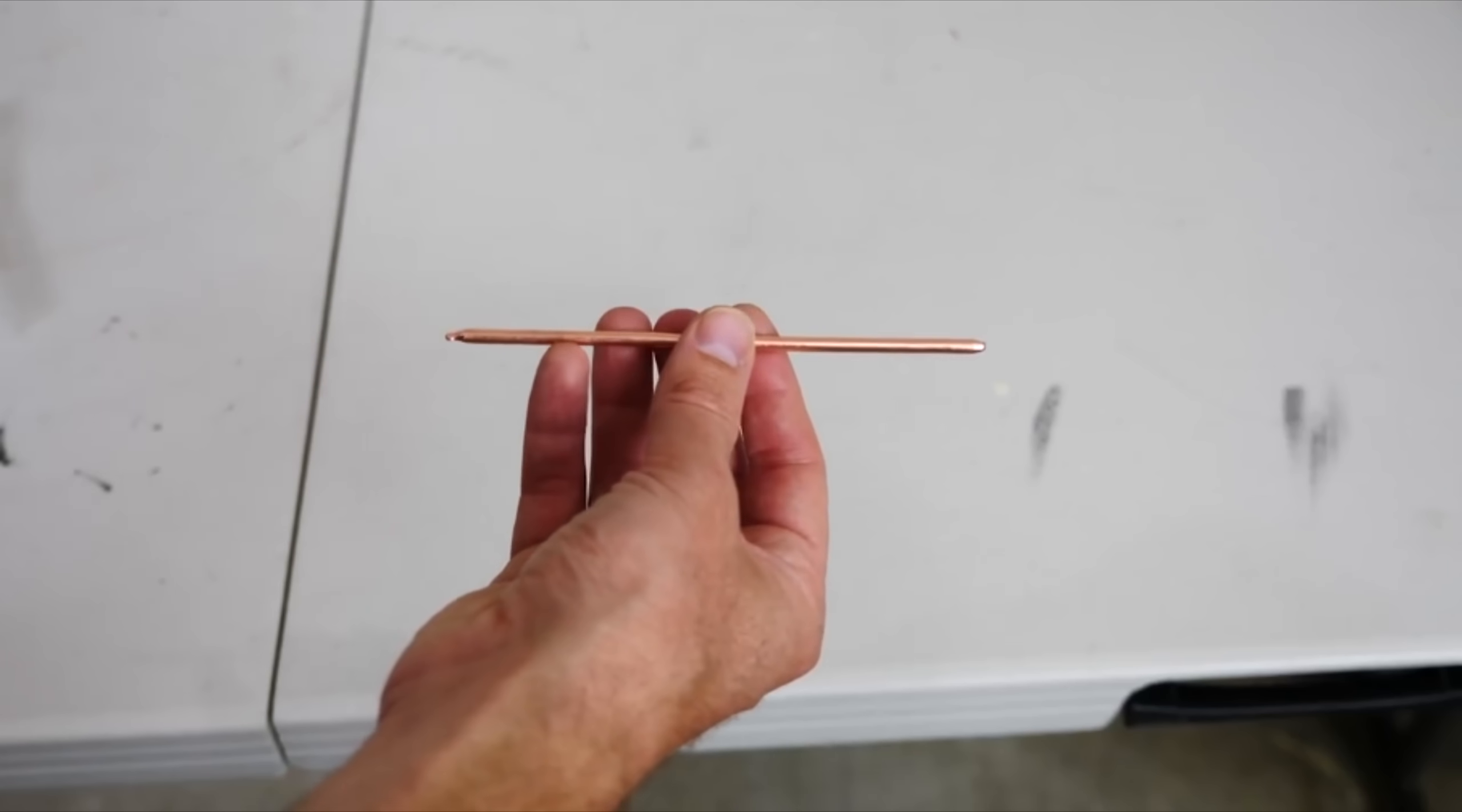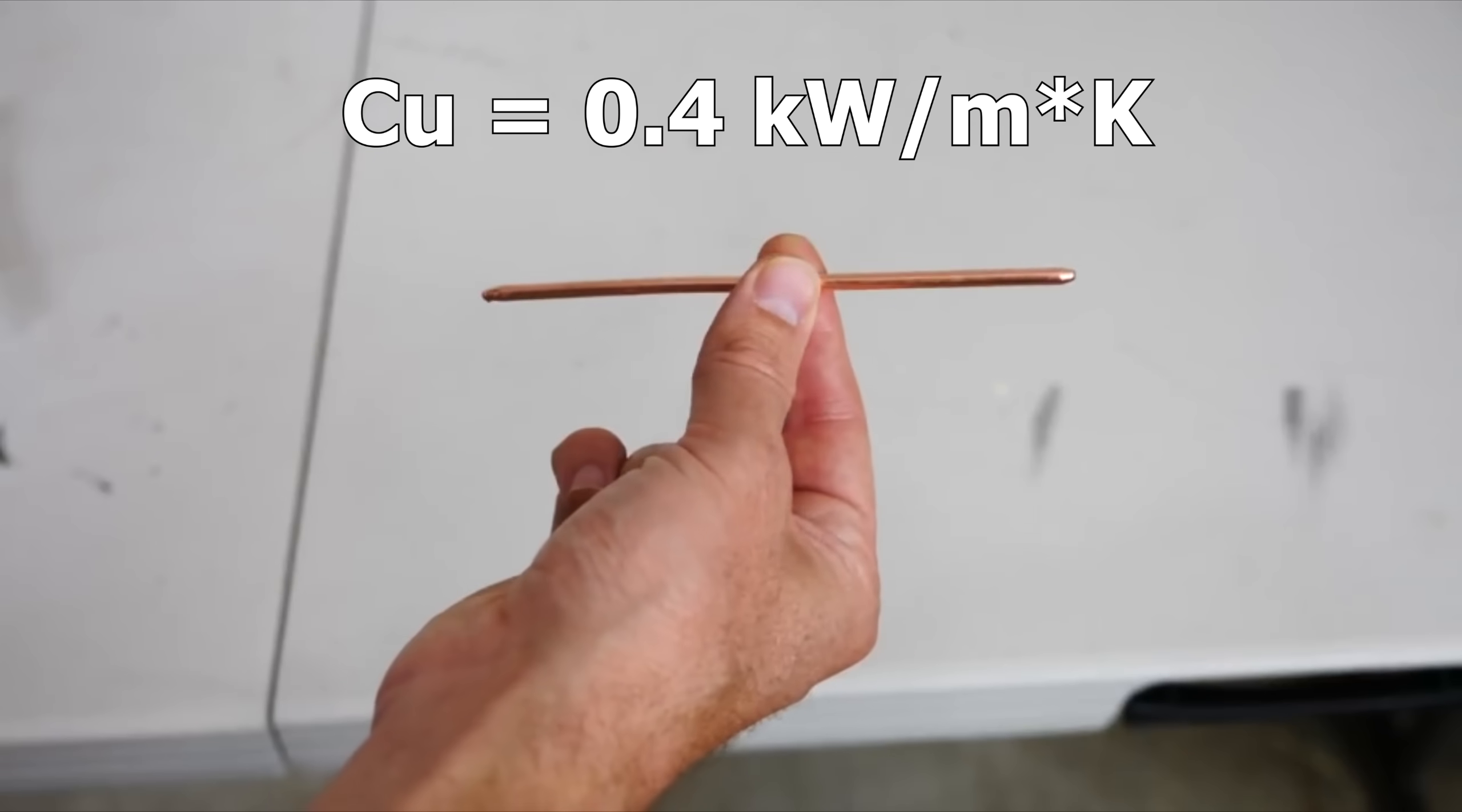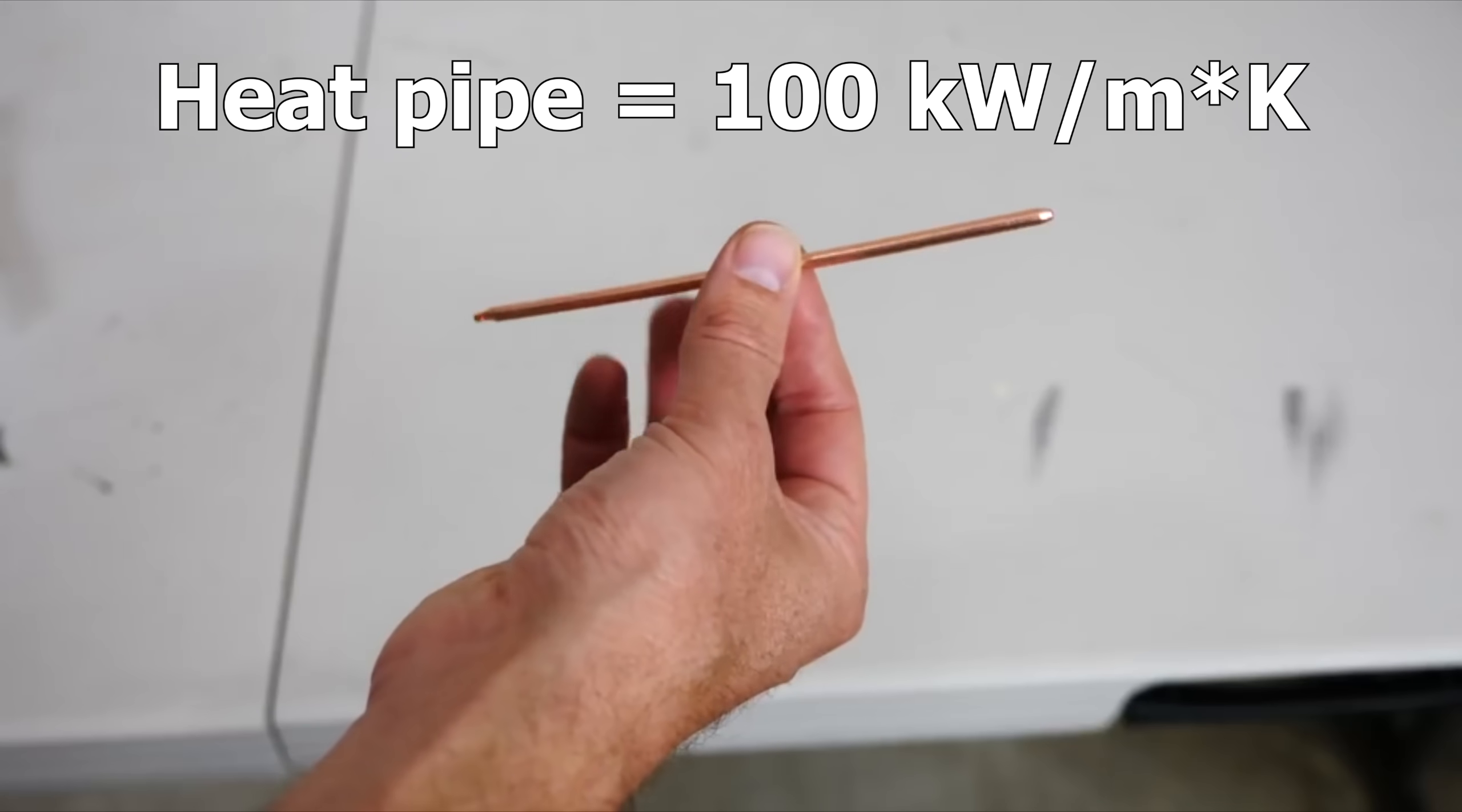So copper can transfer heat at around 0.4 kilowatts per meter kelvin. And this heat pipe can transfer at a hundred kilowatts per meter kelvin.